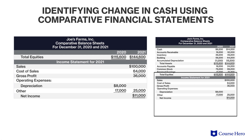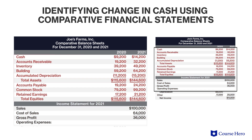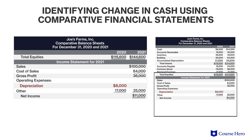Preparing the statement of cash flows through the indirect method requires pulling information from the income statement and the balance sheet. For example, the increase or decrease to accounts receivable is something that can be computed by comparing last year to this year's balance sheet. On the other hand, the amount of depreciation in net income comes from the income statement.